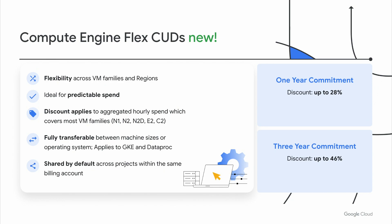Whether your workload requirements change, you expand geographically, or you want to upgrade to the latest and greatest VM, FlexCUDs will provide you a simple and easy way to save money and manage spend. So Courtney, you've told us about how rate optimization has been very effective at General Mills for saving costs using CUDS or BigQuery slots. What other ways have you been saving costs?